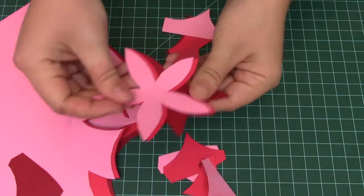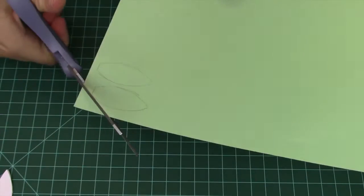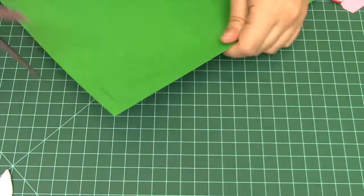Once you're done, you'll have three perfectly identical flowers. Next, you'll want to cut out your leaves, as well as your stem from the green construction paper.